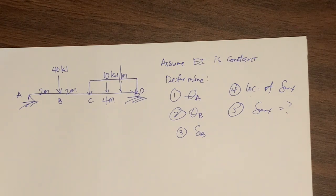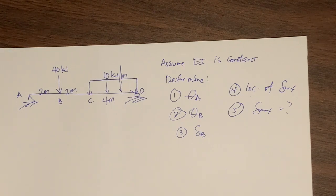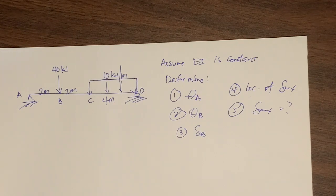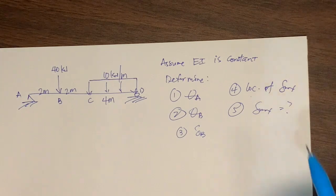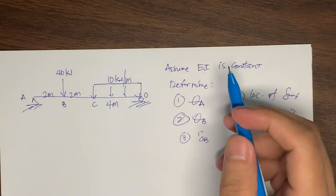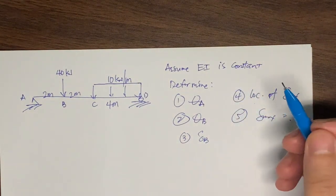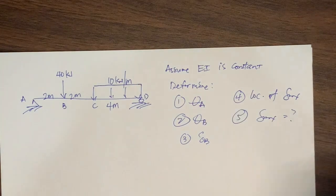We also discussed what we call the bracket method or Macaulay method, which produces a single moment equation that represents the whole beam. To create the moment equation using the Macaulay method, we just need to cut the last segment of the beam, coming from the left side.